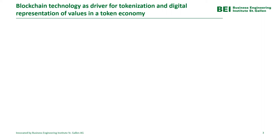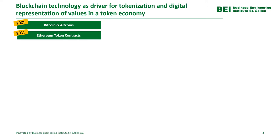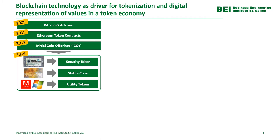To summarize the outstanding role of blockchain technology as a driver towards the token economy, I want to highlight the most important events and milestones in the recent decade. We had the implementation of the Bitcoin protocol in 2009, different altcoins followed, and then in 2015 we had the implementation of the ERC20 Ethereum token contract. This facilitated the issuance of own tokens on the Ethereum blockchain, which led to a vast amount of different initial coin offerings in 2017.